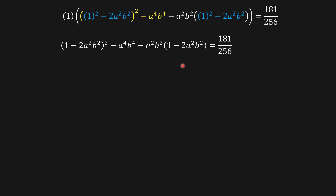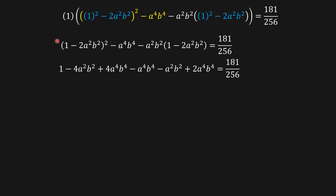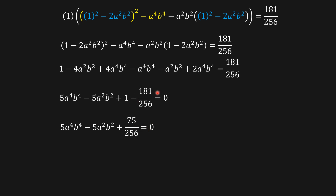Expanding the power and multiplying terms out, then organizing: 4 minus 1 is 3, and 3 plus 2 is 5, giving us 5a⁴b⁴ minus 5a²b² plus 1. Bringing the constant to the other side gives zero. Taking the common denominator for these two terms and dividing both sides by 5, we get a quadratic equation in terms of ab.